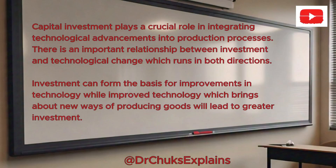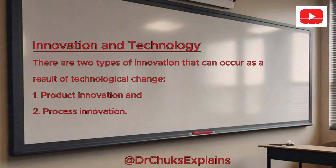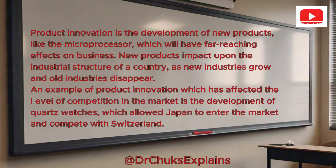For private firms, the main determinants of the level of investment will be the rate of technological change and the scope for extra profit as a result of these changes. Innovation and Technology. There are two types of innovation that can occur as a result of technological change: product innovation and process innovation. Product innovation is the development of new products, like the microprocessor, which will have far-reaching effects on business. New products impact upon the industrial structure of a country as new industries grow and old industries disappear. This in turn will lead to changes in the occupational structure of the workforce. It has even had the effect of reducing the benefits large firms derive from economies of scale in cases where the technological change can be exploited by small firms as well.